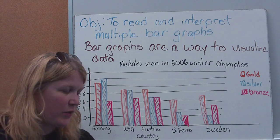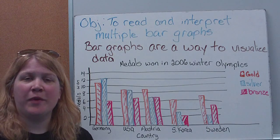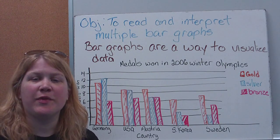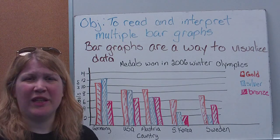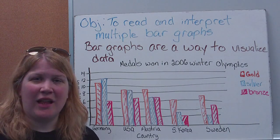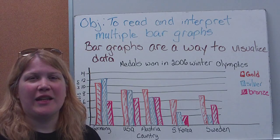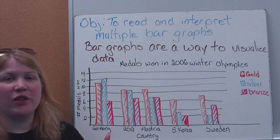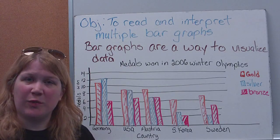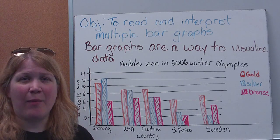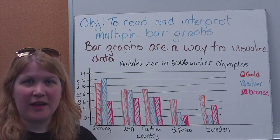Hey guys, welcome back. Continuing on with data and statistics, we're going to take a look over the next few lessons about some of the different graphs that we can use. Graphs are simply just visual ways in which we can analyze data — a way to display your data and tell what's going on. So today we're going to look at bar graphs, specifically multiple bar graphs, meaning we're looking at multiple data from multiple different places.